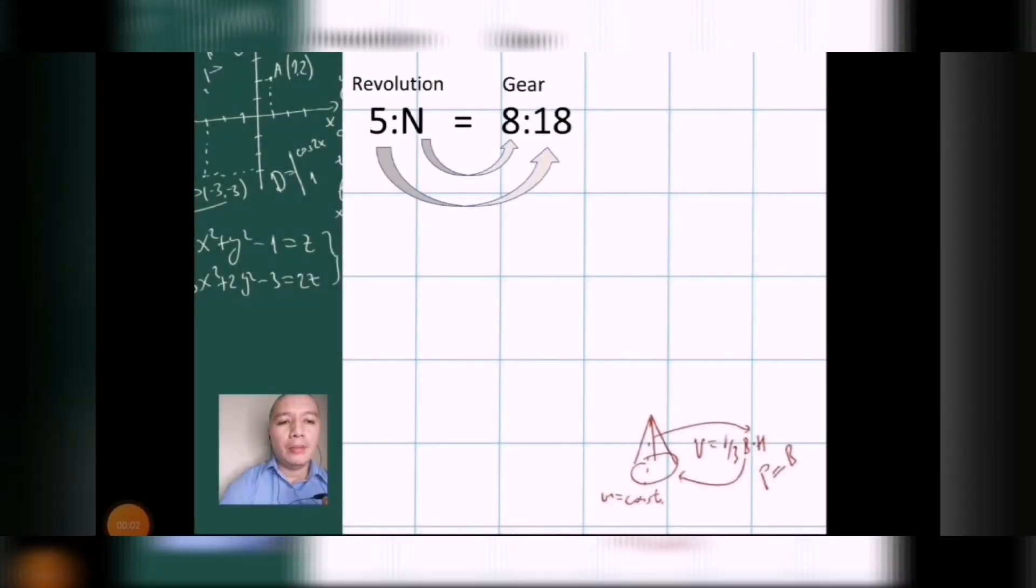We'll answer the same problem using the inner and outer method or approach. So, here, we wrote all of the revolutions given on the left side, 5 is to N, it is equals to gears. 8 is equals to 18. So, 5 multiplied by 18, and N is multiplied by 8.